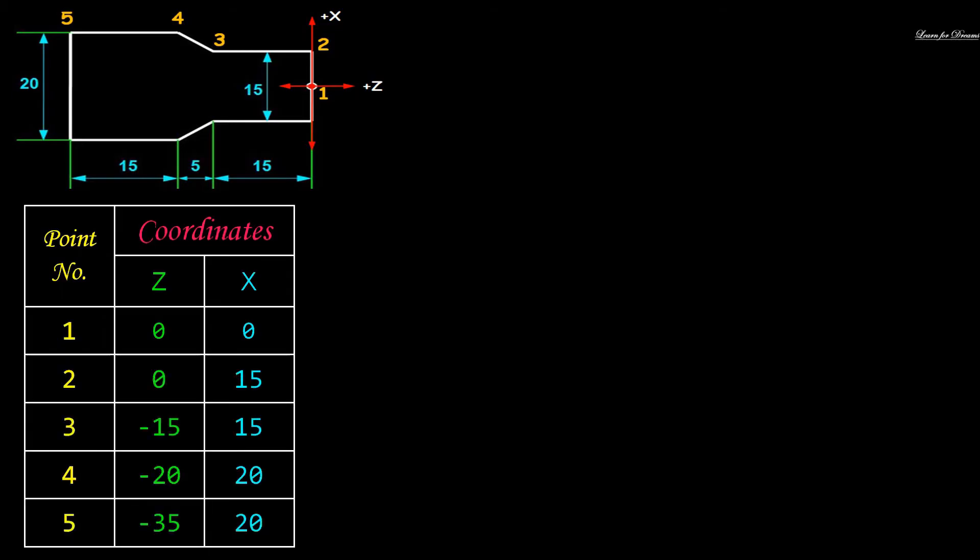As the first point is an origin, toh uske coordinates rehenge 0,0. Then for point 2, Z coordinate is 0 and X coordinate is 15 for the vertical dimension. We will consider the entire diameter.